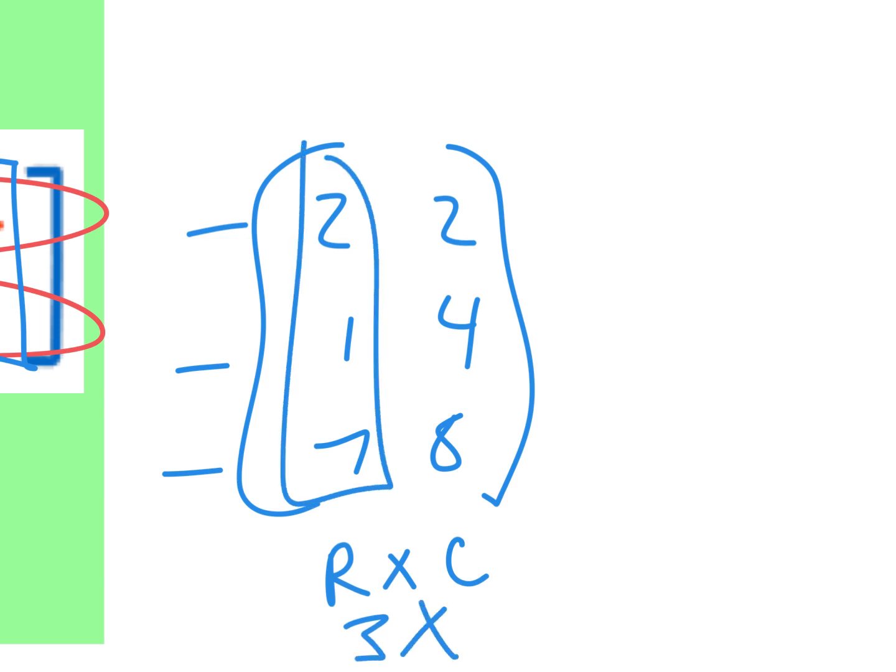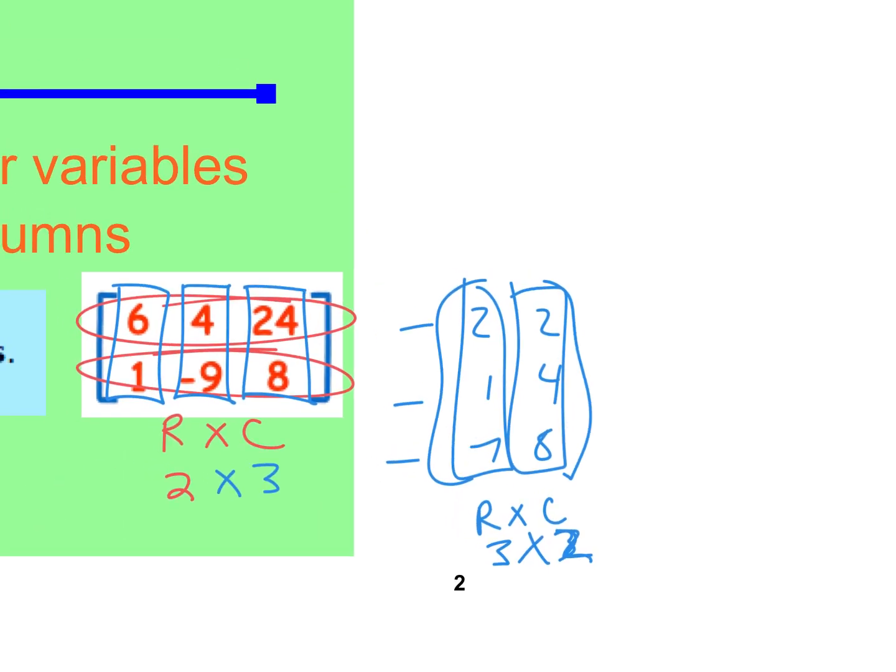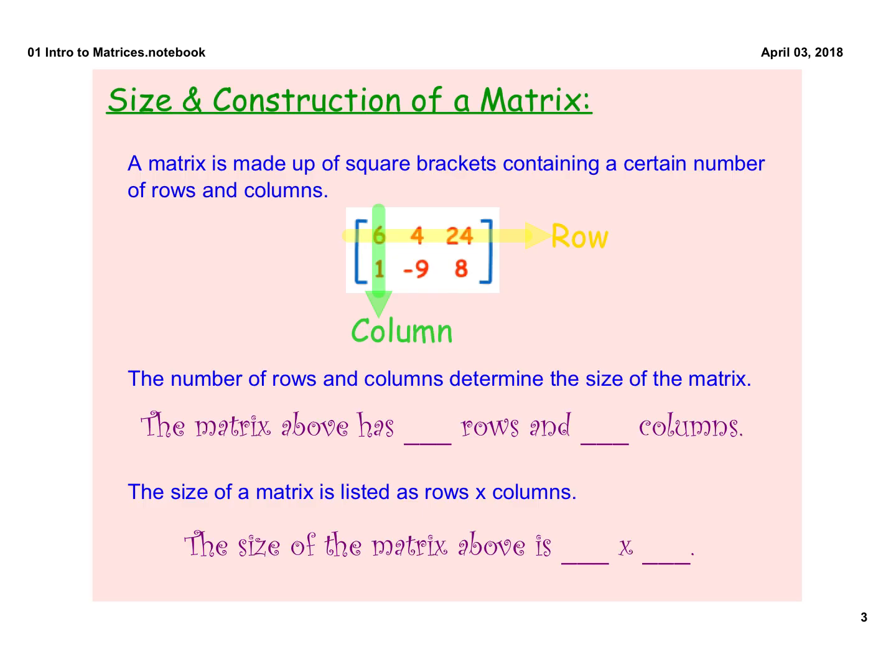Each little piece is called an element of the matrix. That right there is a little element. All right, so there's a better, more pretty description of the rows and the columns.